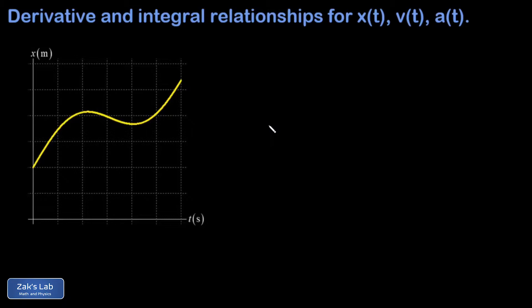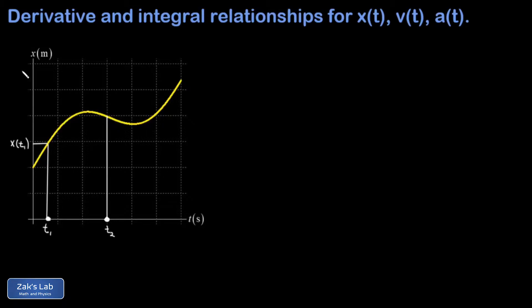We start out by looking at some arbitrary position function x of t. This graph describes the motion of an object in a one-dimensional space. We see that the position axis is labeled with units of meters and the time axis with seconds. Now suppose we label a moment of interest — I'll call that t1 — and another moment of interest, t2. The position of the object at t1 is given by x of t1, and the position at t2 is given by x of t2.